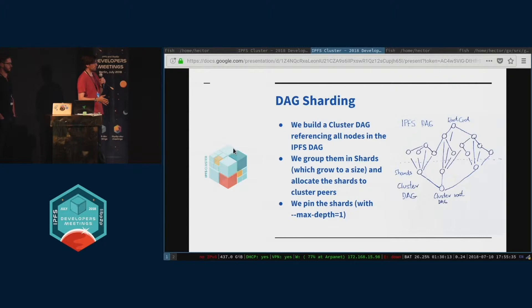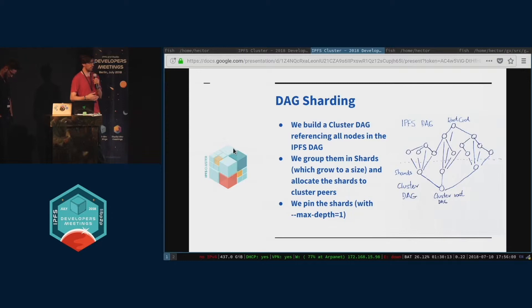A cluster DAG is an alternative tree — an alternative DAG which is going to divide the original IPFS DAG into shards. Each shard is going to be a bucket. It's going to be the unit which is allocated to an IPFS daemon and then replicated according to your replication factor.